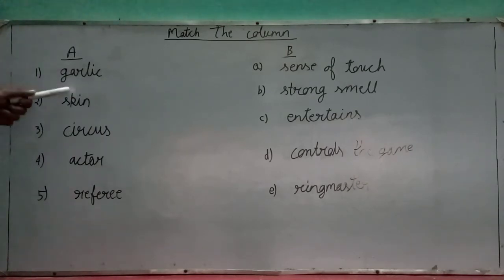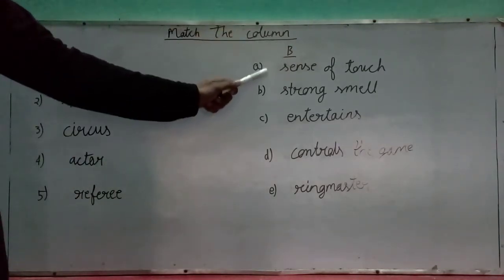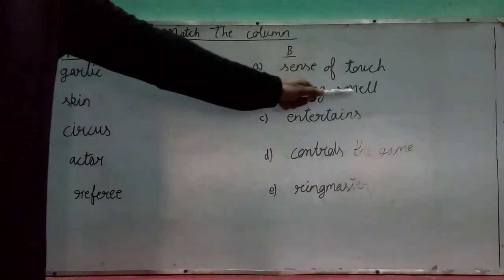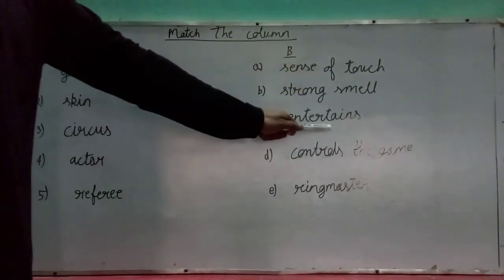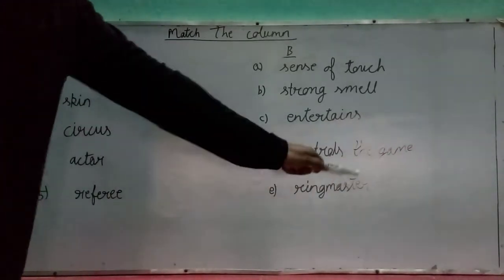One, garlic. Two, skin. Three, circus. Four, actor. Five, stepforce. The answers in column B: A, sense of touch. B, strong smell. C, entertains. D, controls the game. E, ringmaster.